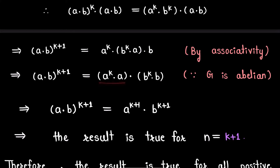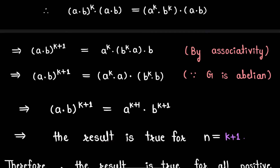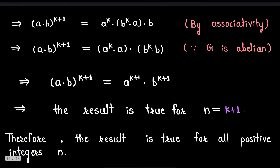This simplifies to a^(k+1) · b^(k+1). So as a final result we get (a·b)^(k+1) = a^(k+1) · b^(k+1), meaning the result is true for n = k+1. Therefore, the result is true for all positive integers n.